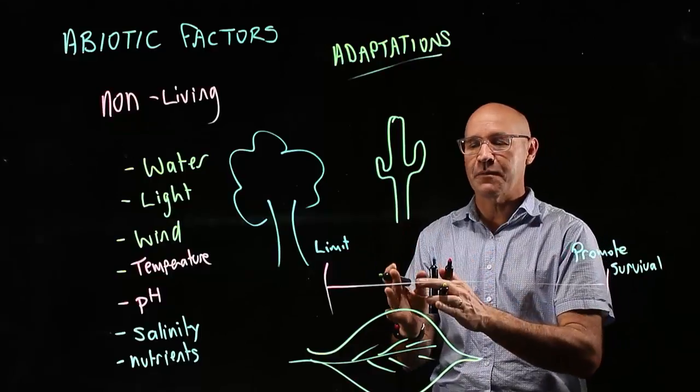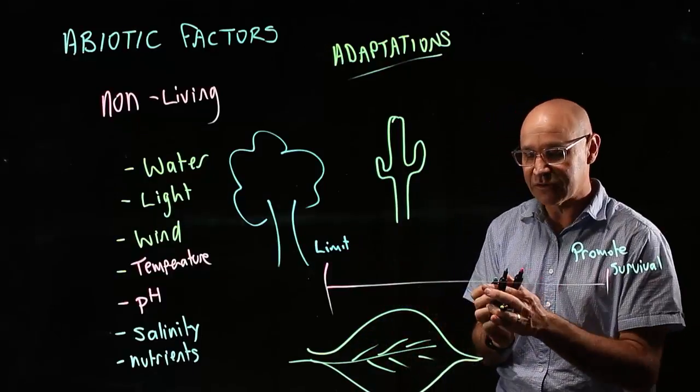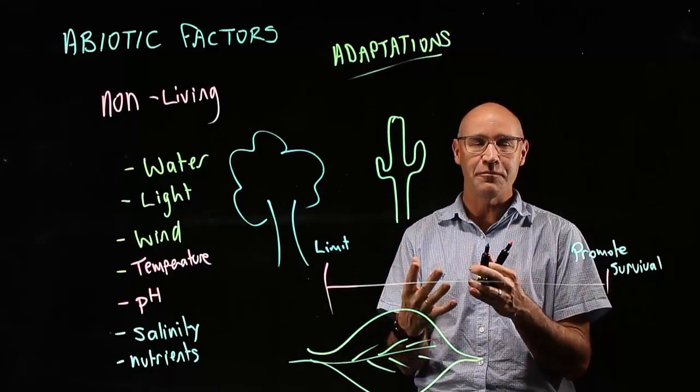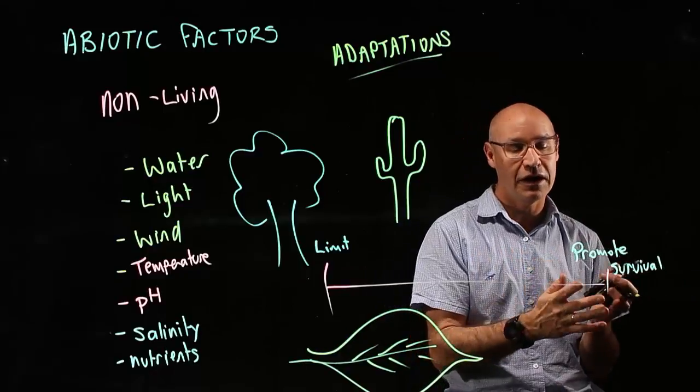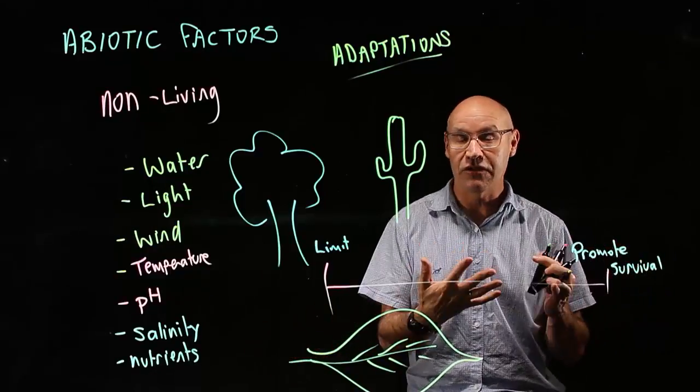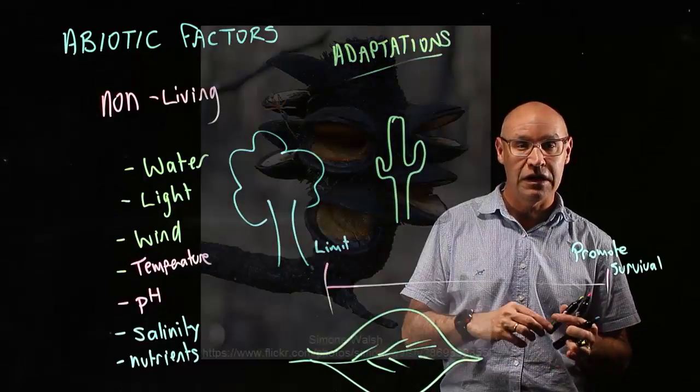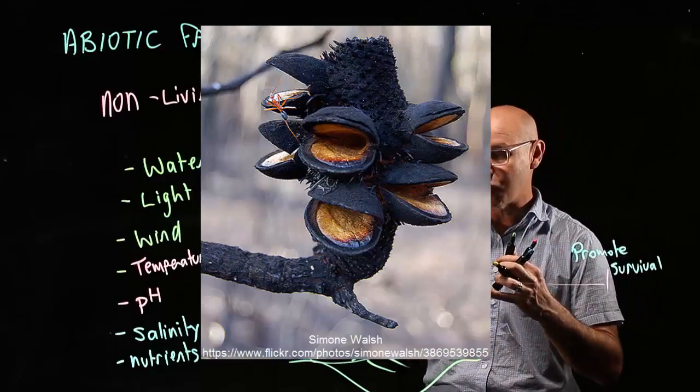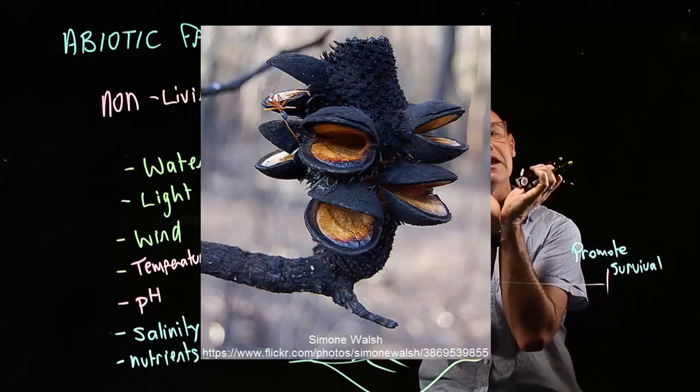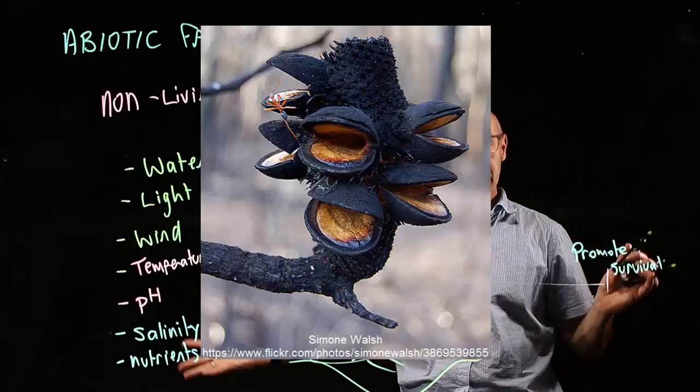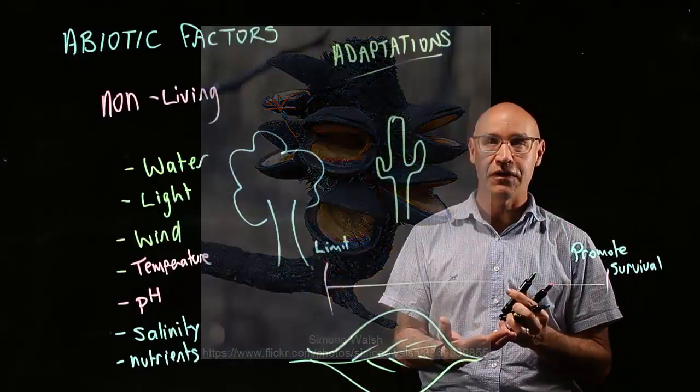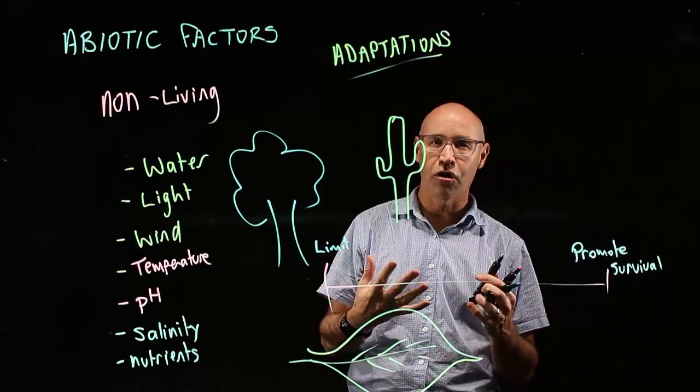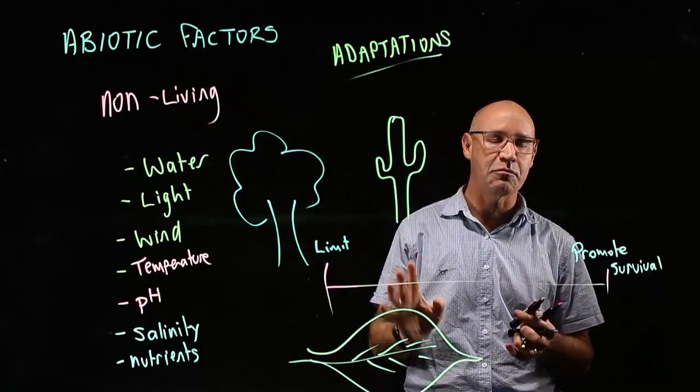They need to have adaptations to be able to cope with that. Another example is fire. Obviously imagine if you've got fire it's going to wipe out a plant. But there's some Australian natives that actually thrive or exploit fire such that when fire rips through it actually opens their seed pods and spreads the seeds. They use fire to their advantage - it's an adaptation to cope with the abiotic factors of a particular area.